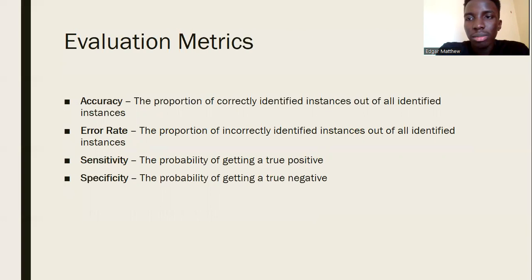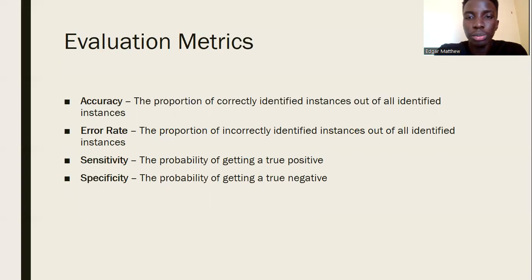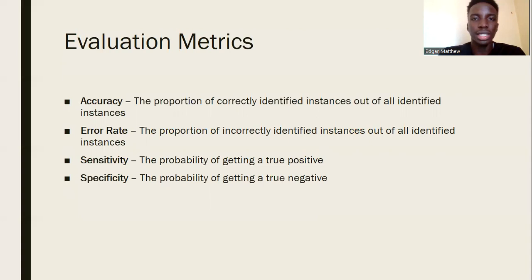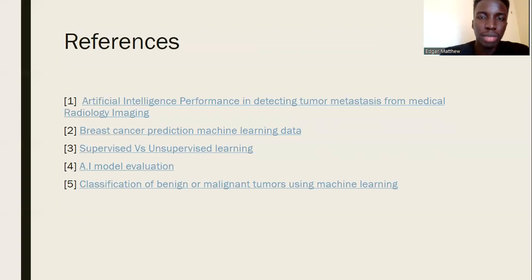The evaluation metrics for the project will use accuracy — the proportion of correctly identified instances — error rate, the proportion of incorrectly identified instances including false negatives and false positives, sensitivity — the probability of getting a true positive — and specificity — the probability of getting a true negative. Those are some of the references for the research, and that is it.